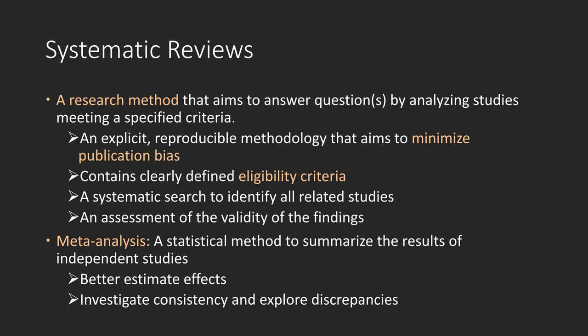Meta-analysis is optional in a systematic review, but many systematic reviews may contain meta-analysis. Meta-analysis is a statistical method to summarize the results of primary studies. By combining data from all relevant studies, meta-analysis can provide a better estimate — for example, the effects of healthcare. Meta-analysis can also help investigate the consistency of evidence across studies as well as explore discrepancies across studies. If you are interested in doing meta-analysis, I would suggest you talk to a statistician.